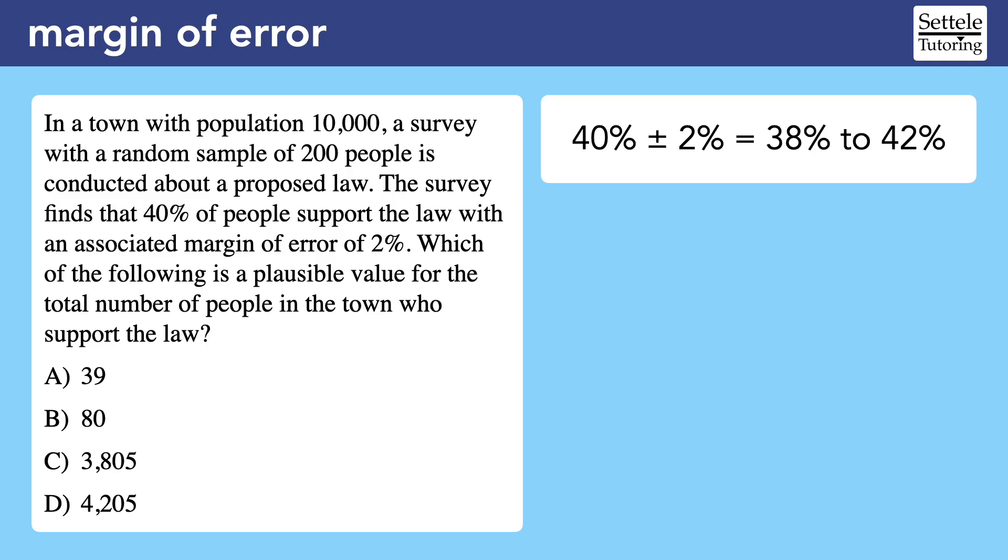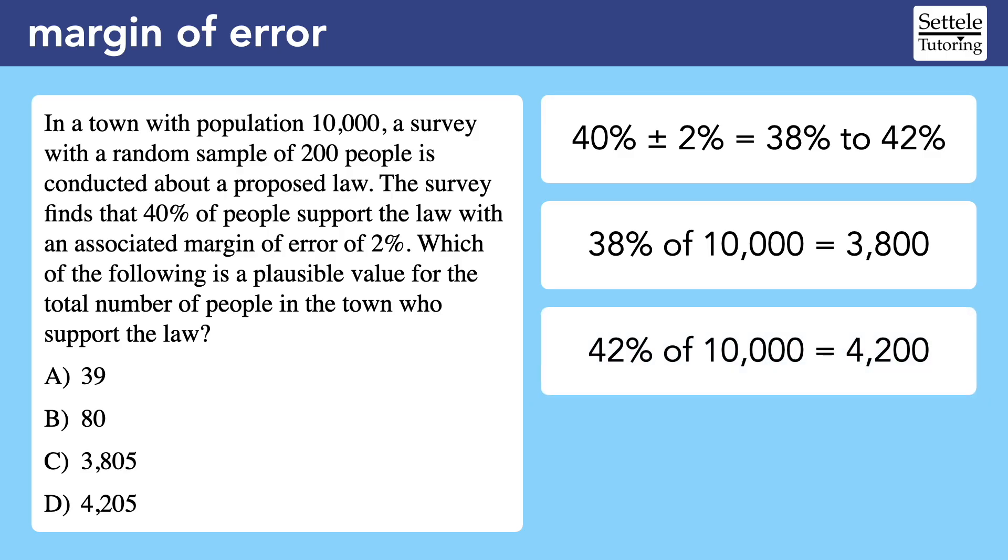But the question is asking how many people in the entire town could possibly support the law. We can find that range by applying the edges of the margin of error to the total population. 38% of 10,000 is 3,800 and 42% of 10,000 is 4,200. This means that it's plausible that somewhere between 3,800 and 4,200 people support the law. Choice C is the only value in that range.